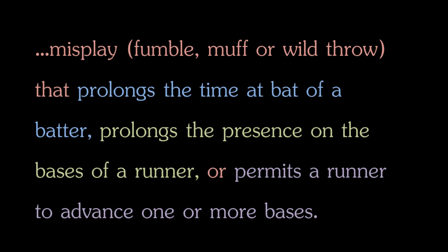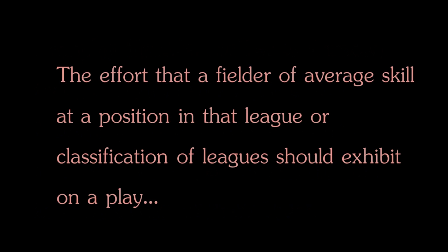The rule starts by defining an error as a misplay — a fumble, a muff, or a wild throw — that prolongs the time at bat of a batter, prolongs the presence on the bases of a runner, or permits a runner to advance one or more bases. The other important term is ordinary effort, defined as the effort that a fielder of average skill at that position in that league or classification of leagues should exhibit on a play. Those two sentences cover the majority of what you need to know about errors.